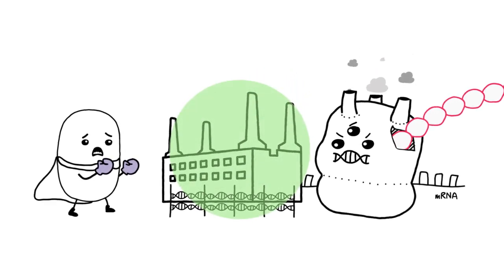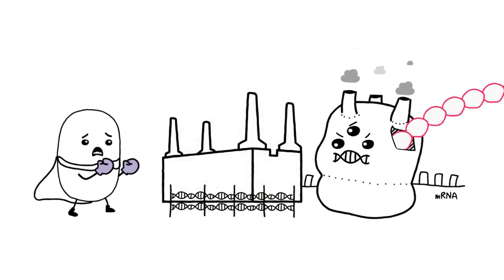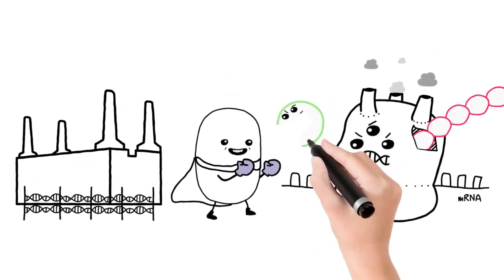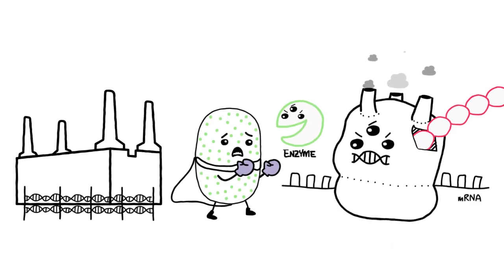A less permeable cell wall or pumping system can keep the flood of antibiotics out of the cell. Drugs that do breach the walls may be destroyed by the production of new protective enzymes.